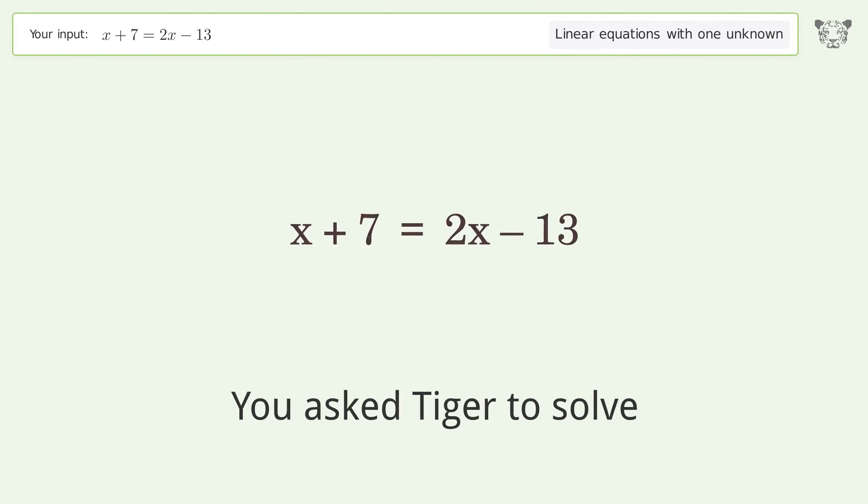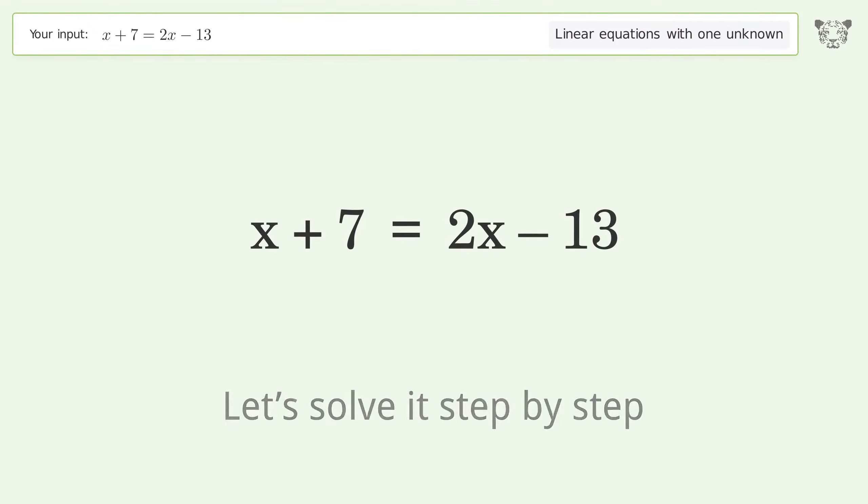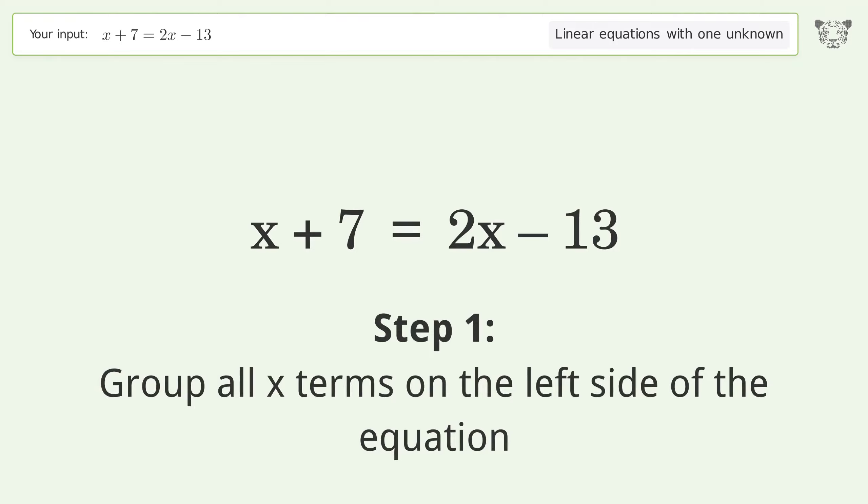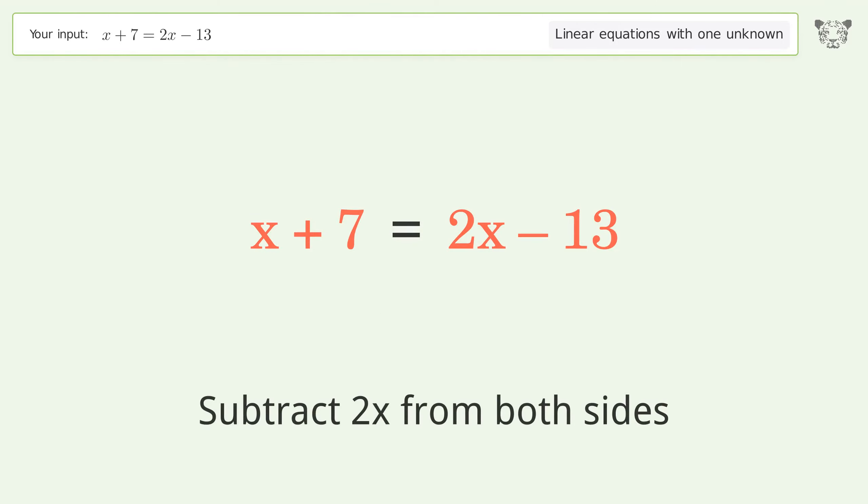You asked Tiger to solve this. This deals with linear equations with one unknown. The final result is x equals 20. Let's solve it step by step. Group all x terms on the left side of the equation. Subtract 2x from both sides.